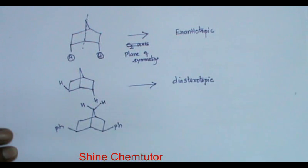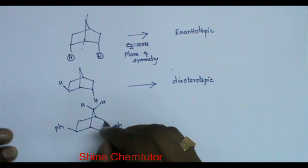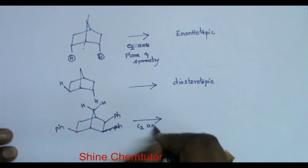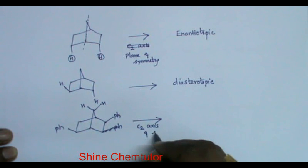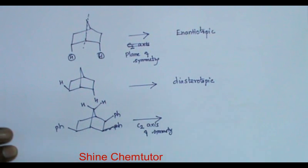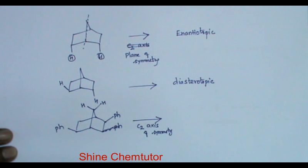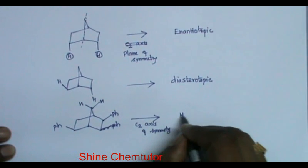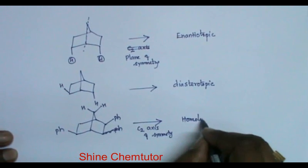What about these two hydrogens? Sorry, I place this on this carbon. This molecule has a C2 axis of symmetry. When there is a C2 axis of symmetry, the two hydrogens should be homotopic.